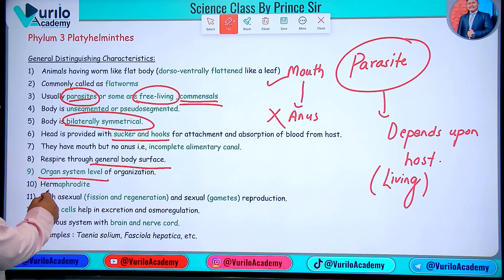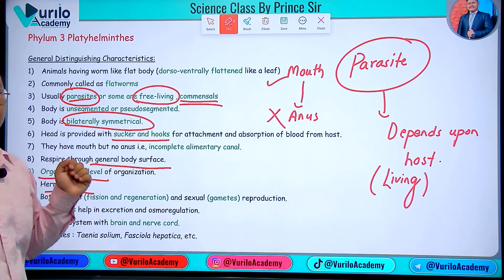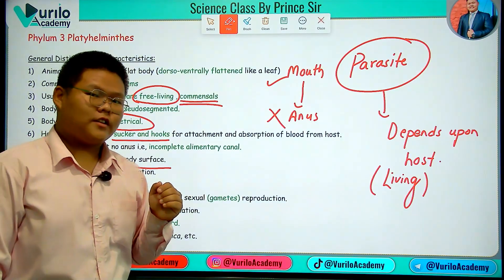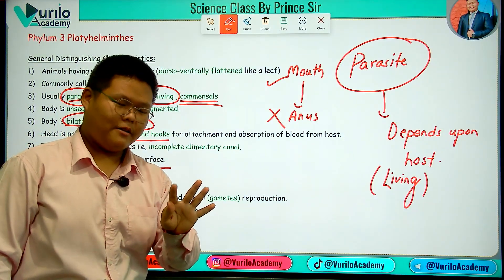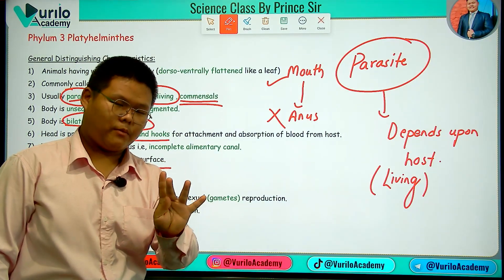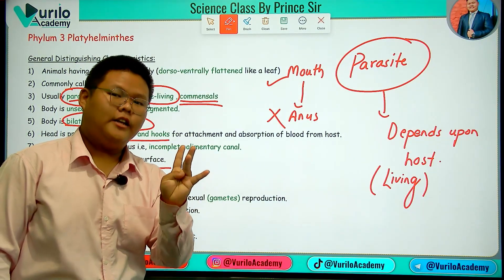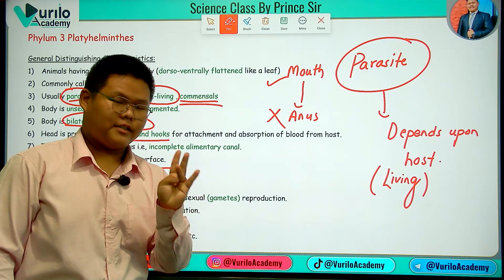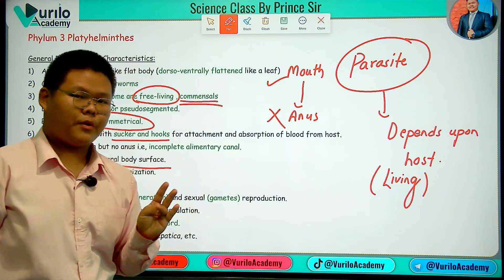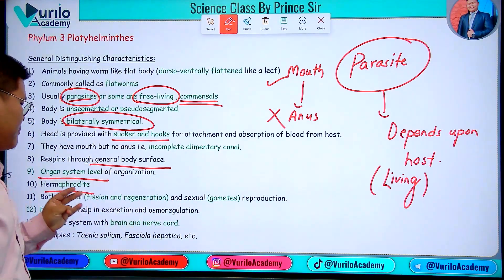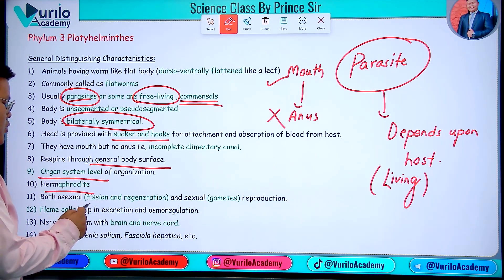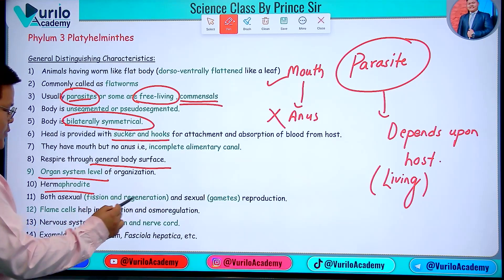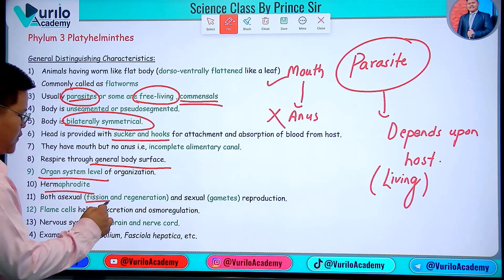They are hermaphrodite — bisexual, hermaphrodite, or monoecious. Sex can also be separate — male or female. Both asexual and sexual reproduction occur.